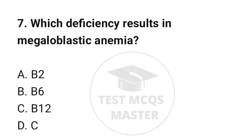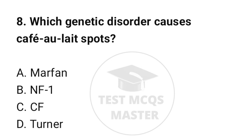Question number 7: Which deficiency results in megaloblastic anemia? The correct option is C: B12. Question number 8: Which genetic disorder causes café-au-lait spots? The correct option is B: NF1.